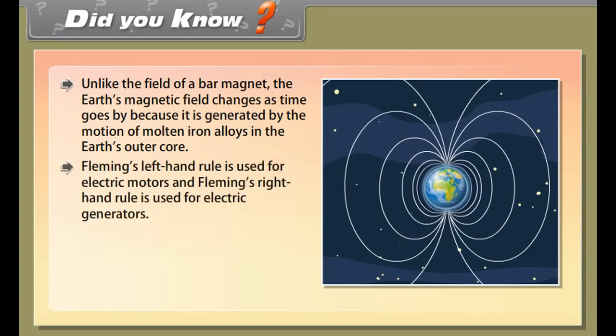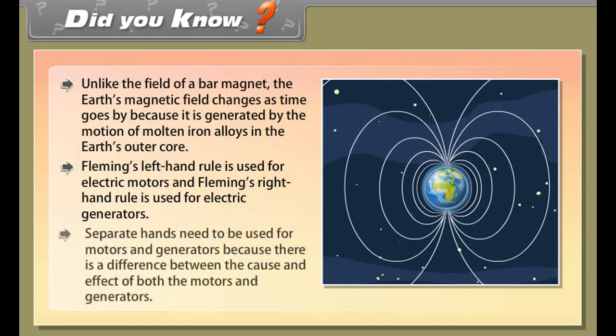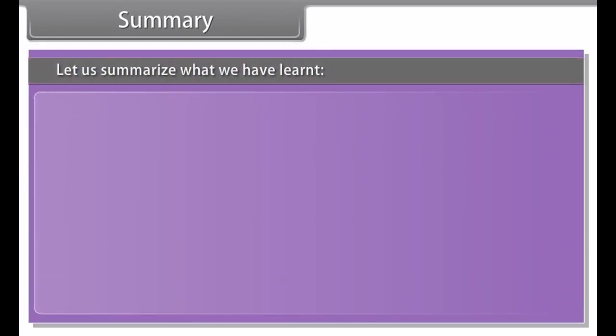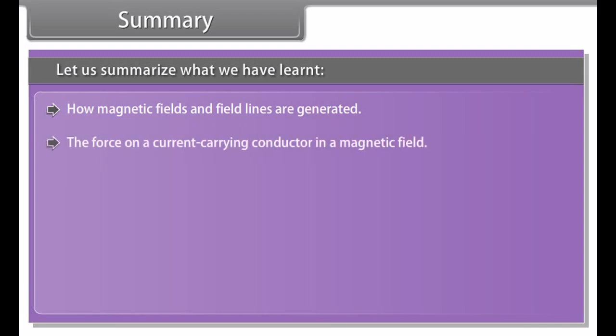A fuse is an important component of all circuits. It ensures that there is no damage that occurs to any appliances in case of current overloading. Overloading occurs when the live wire and the neutral wire come in contact with each other or there is a rise in the supply voltage. In this case the fuse prevents the circuit and the appliance from damage by stopping the flow of electric current.